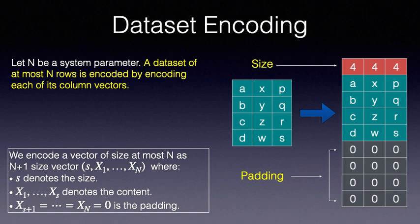Each vector of size at most N is encoded uniformly as an N plus 1 sized vector, say s, x1 to xN. Here, the first coordinate denotes the size of the vector being encoded. The first s values, x1 to xs, denote the content of the vector being encoded, while the remainder is padded with zeros. When we apply this encoding to each of the columns of the example dataset with four rows, we obtain the encoded dataset as shown. In summary, an encoded dataset has size, content, and padding, illustrated in different colors here.